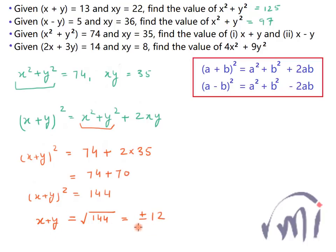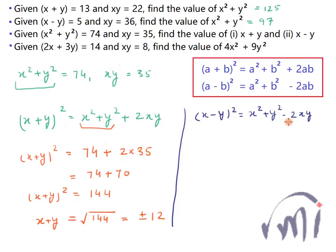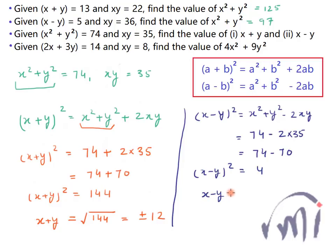Now to find the value of x minus y, I use the second formula. x minus y whole square equals x squared plus y squared minus 2 times xy. Substituting x squared plus y squared as 74 and xy as 35, this gives 74 minus 2 times 35, which equals 74 minus 70, which equals 4. So x minus y equals the square root of 4, which is plus or minus 2. So the value of x plus y is plus or minus 12 and x minus y is plus or minus 2.